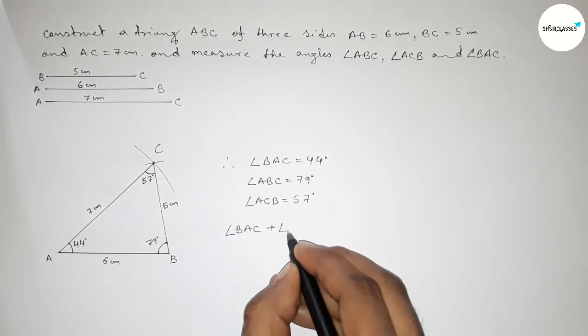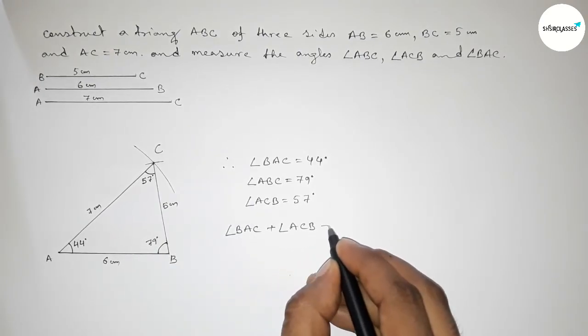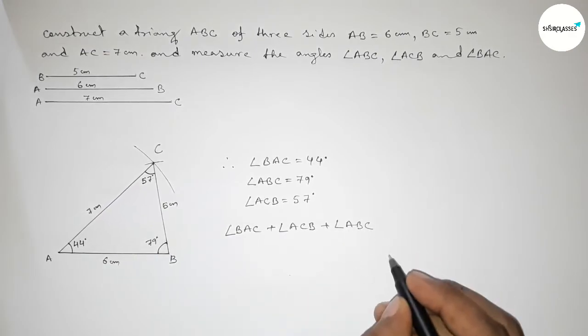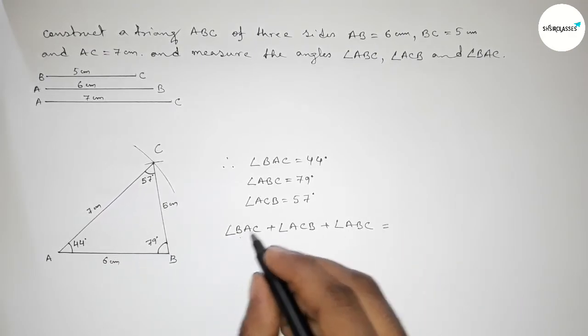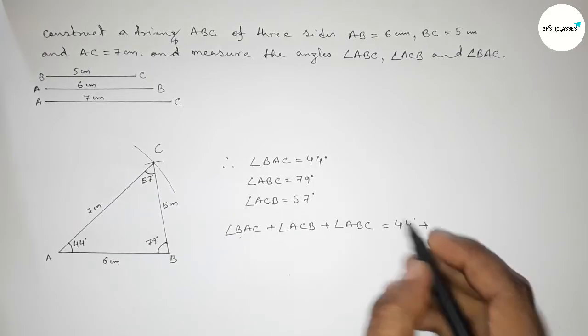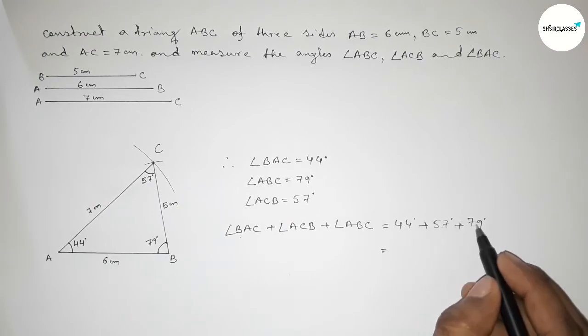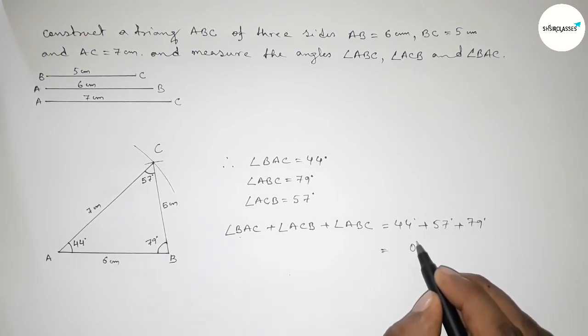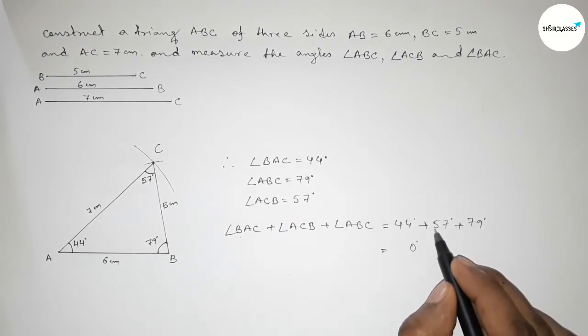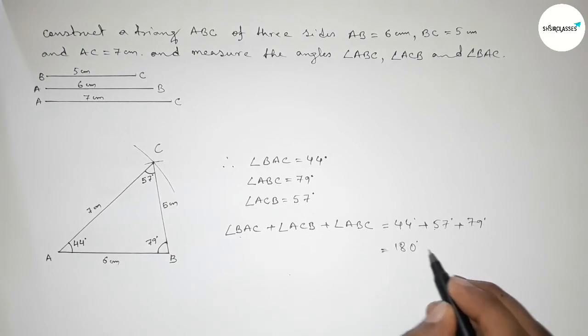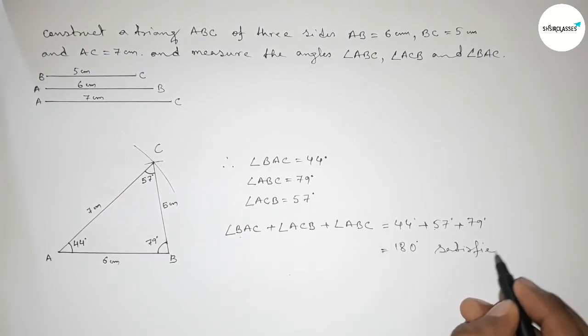Now adding the three angles to satisfy the condition. Adding 44 plus 57 plus 79, so this is 180 degrees, which satisfies the condition of a triangle.